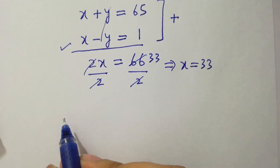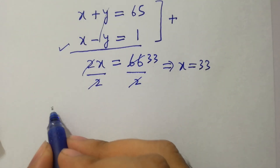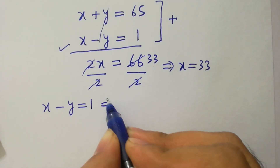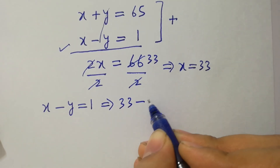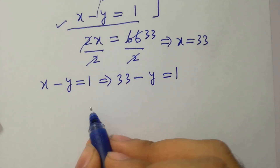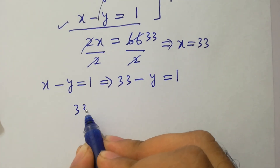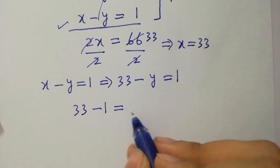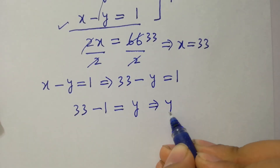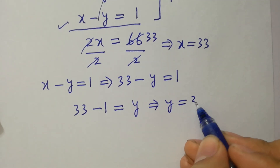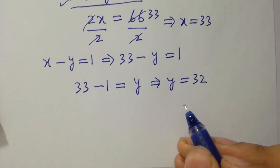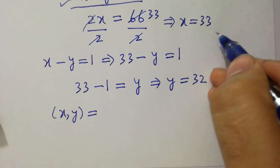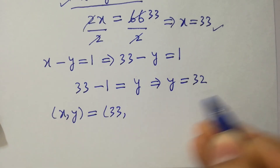Put this into the equation to find the value of y. x minus y equals 1. x is 33, so 33 minus y equals 1. Therefore y equals 33 minus 1, which is 32. So the values of x and y are 33 and 32.